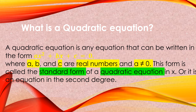When can we say it is already on its standard form? If AX squared is the first term, BX is our second term, and C should always be the constant, and it should always be equated to 0. So this is the standard form of a quadratic equation in X, or it is an equation of the second degree.